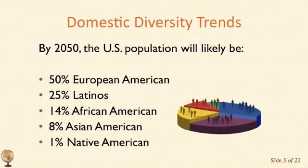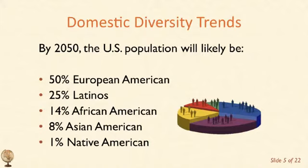The United States is becoming an increasingly diverse place. In 2000, European Americans constituted 70% of the population. In the 2010 census, that was down to 65%. The projection for mid-century is that Americans of European descent will be barely, if at all, in the majority. We're seeing increases in the Hispanic population in particular — 15% in the most recent census, projected to increase to about a quarter of the population — as well as increases in the African-American and Asian-American populations. You don't have to venture outside U.S. borders to experience cultural diversity.